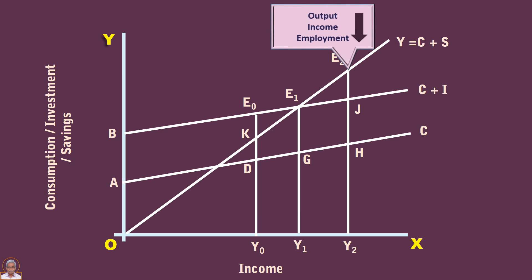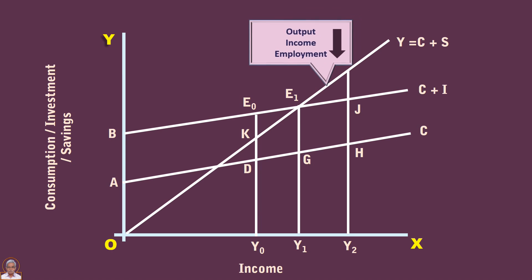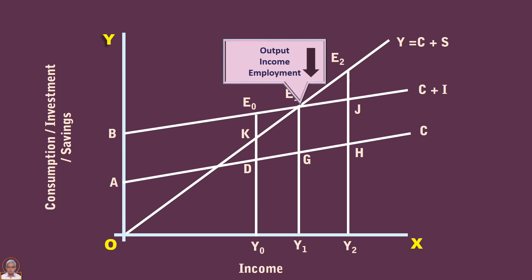As a result of this, output, income, and employment will fall. This process will continue until equilibrium level of income Y1 is re-established again.